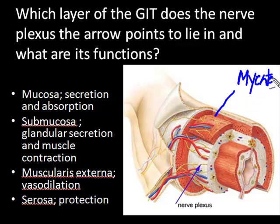This nerve plexus is known as the myenteric nerve plexus. The next layer is a white connective tissue layer, which is the submucosa.